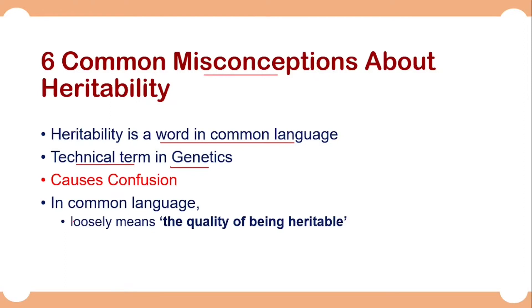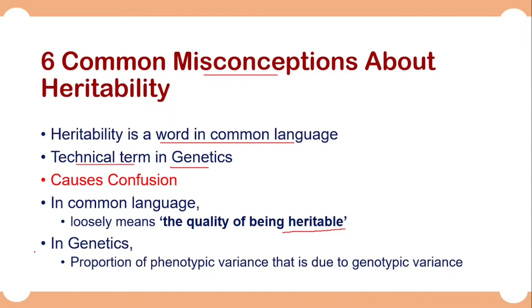In common language, heritability loosely means the quality of being heritable, or the quality of transmissibility of characteristics from parents to offspring. But in terms of genetics it has completely different meanings. In genetics it is used as a genetic parameter, defined as the proportion of phenotypic variance that is due to genotypic variance. It tells us about the part of phenotypic variance that is due to genotypic differences among individuals.